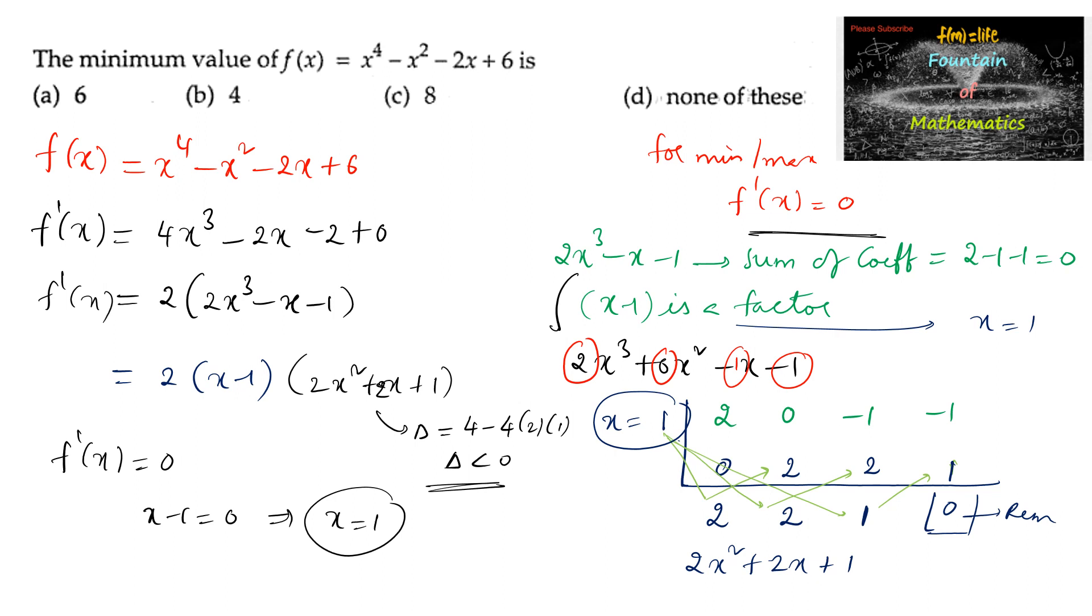So now let us check the double differentiation. f''(x) is equal to... So we can write double differentiation from here. So we can get 4 times 3 is 12x squared minus 2.